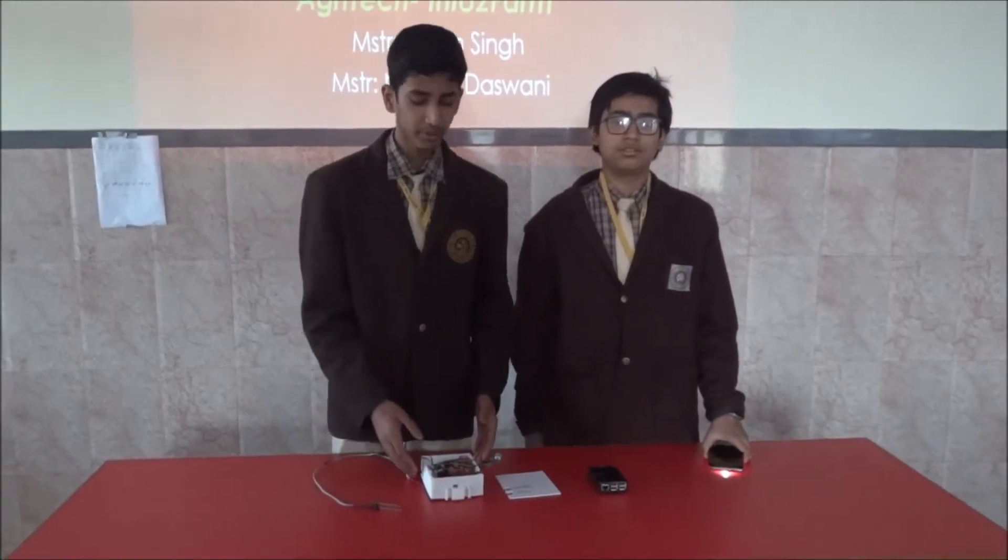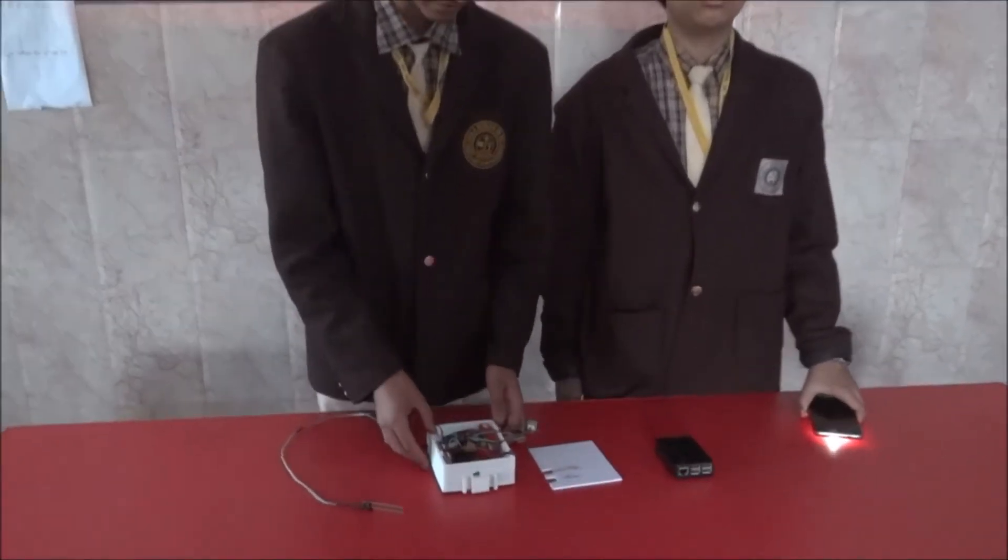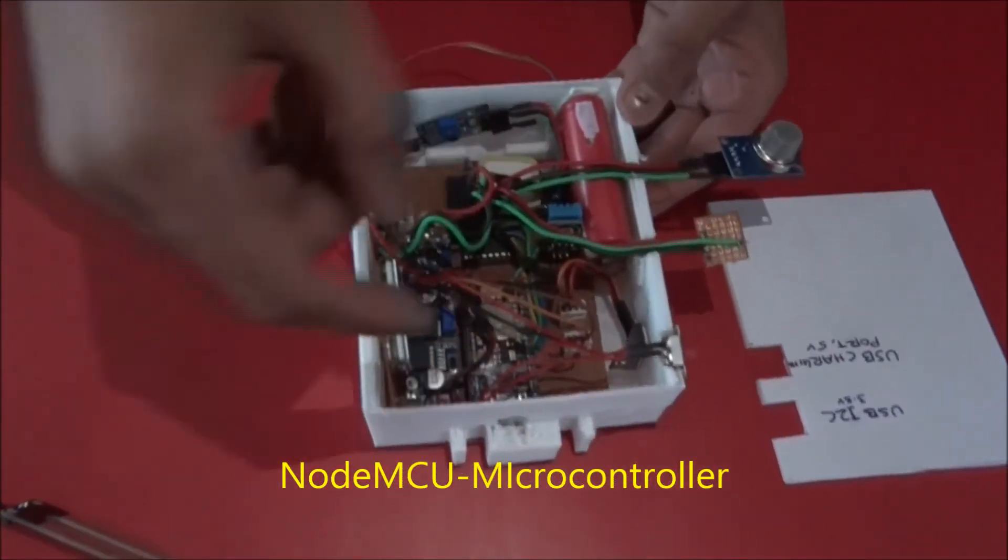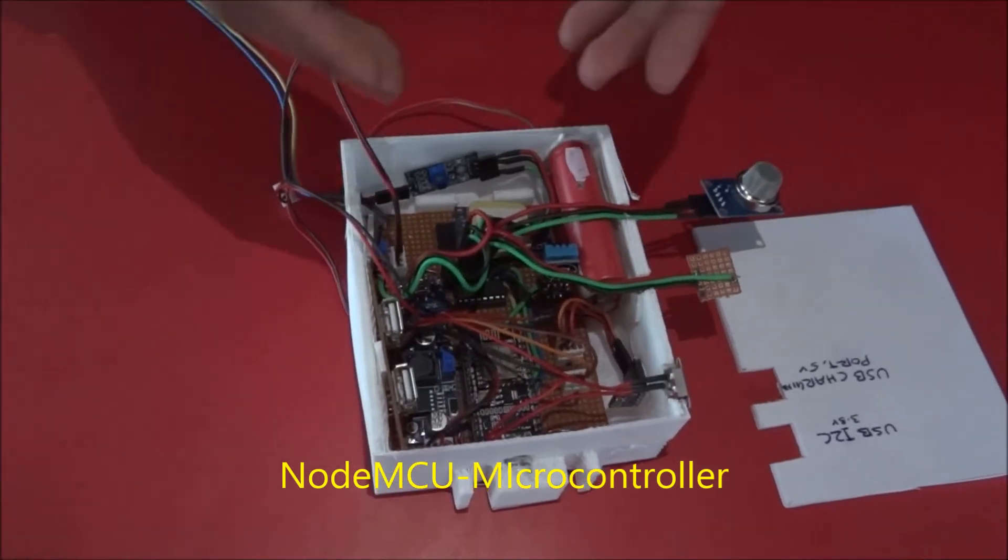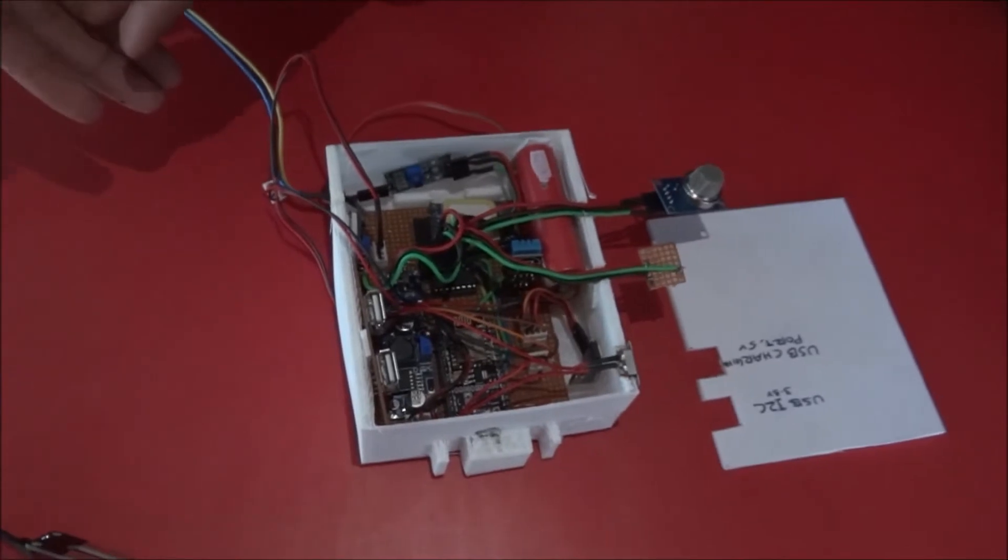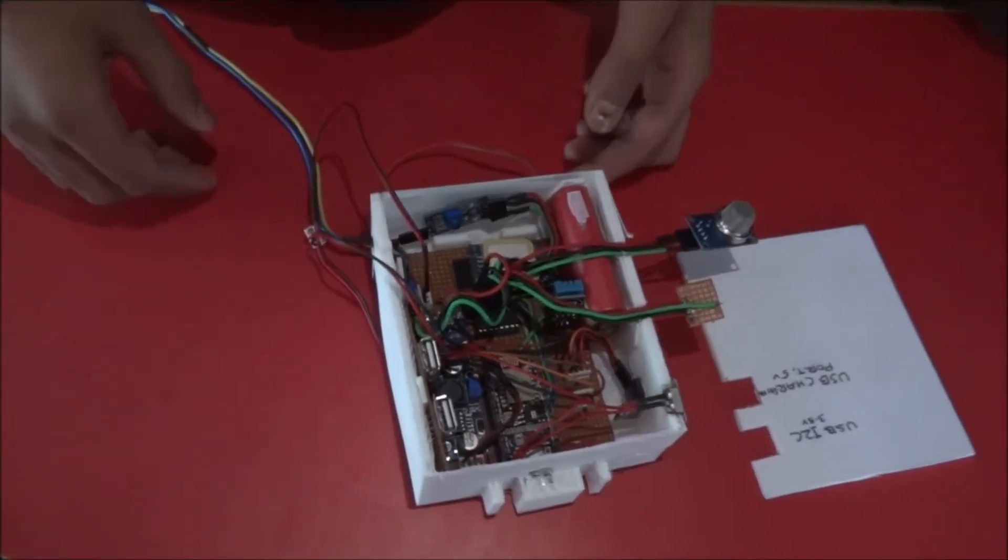So let's start with our prototype named as Info2Kisan. Our prototype controller is NodeMCU. We have used various sensors and we have divided them in two categories. One is analog sensor and one is digital sensor. So let's start with the analog sensor.